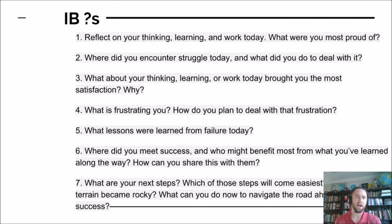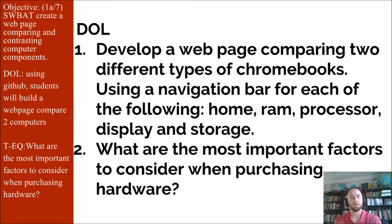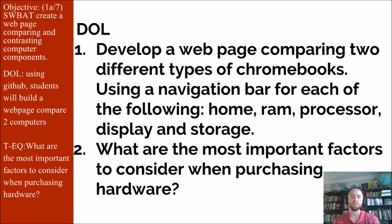Since we're in IB school, I am adding questions to the end of each of my lessons. All you need to do is choose one of these seven questions to answer and post that to Canvas. After you've gone through all that research and creation, you're developing a webpage comparing two different types of Chromebooks using a navigation bar for Home, RAM, processor, display, and storage. The key question: what are the most important factors to consider when purchasing hardware? I'll be able to check by going to your website.